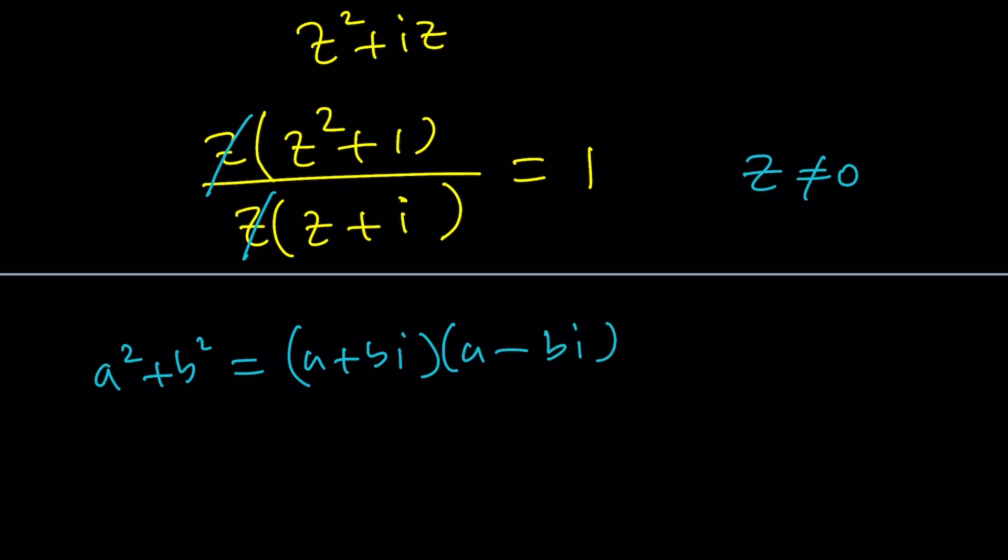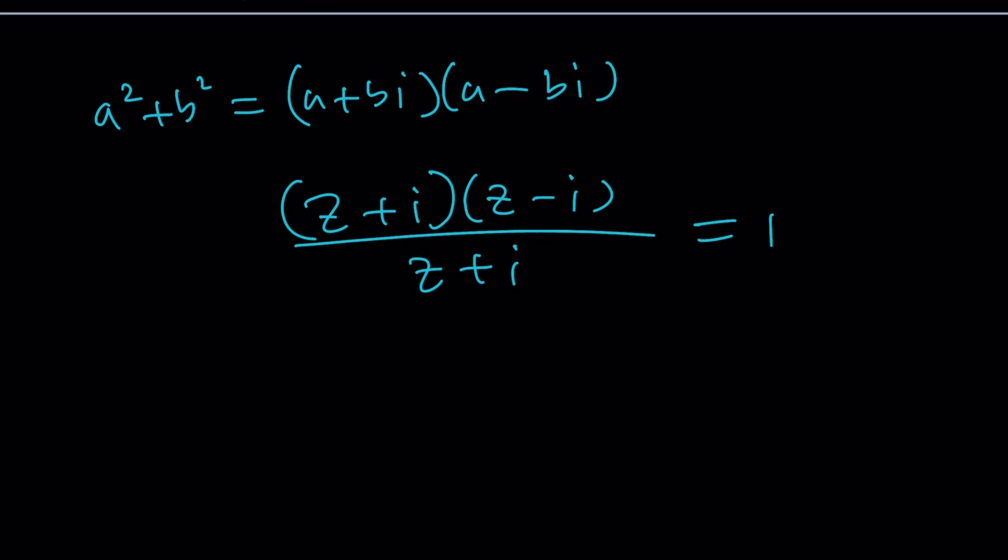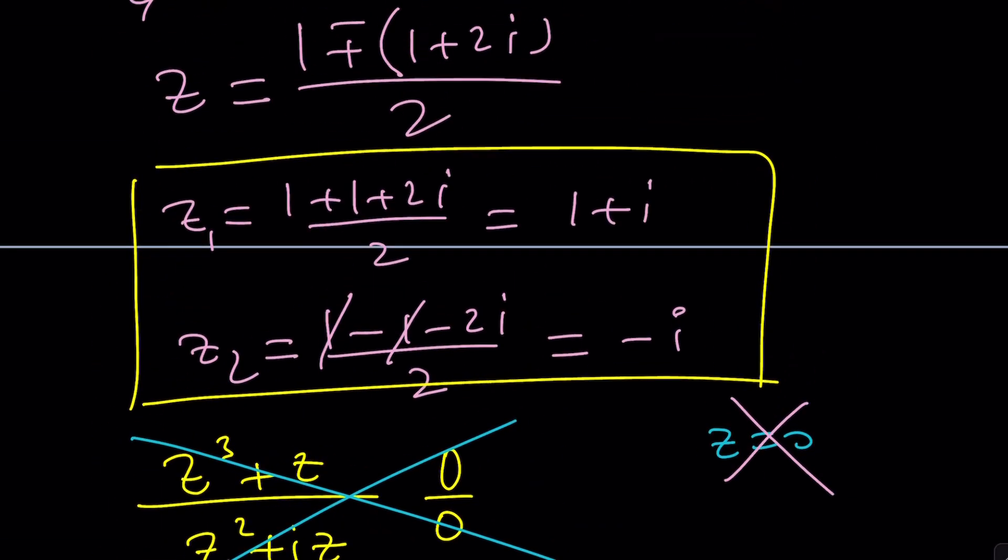So, this can be factored into z plus i times z minus i. How nice. Divided by z plus i. And then set equal to 1. And now, z plus i should not be 0, right? Hmm. What happens if z plus i is equal to 0? That means z is going to be negative i. Is negative i a solution? Yes. How come? Maybe it's not a solution. We didn't check that. Uh-oh.